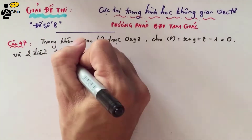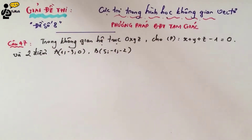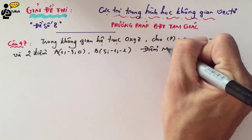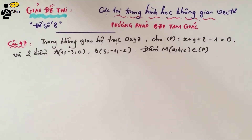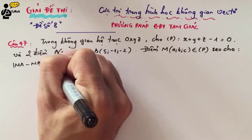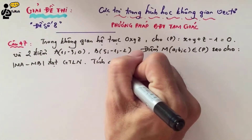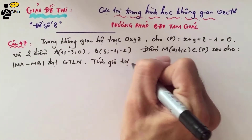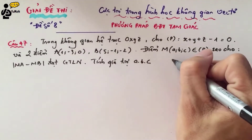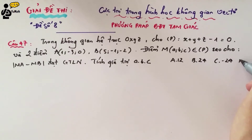Point A has coordinates (1, -3, 0), point B has coordinates (5, -1, -2), and point M has coordinates (A, B, C) lying on plane P, such that the absolute value of MA minus MB reaches its maximum. Find the value of A × B × C. Answer A is 12, answer B is 24, answer C is -24, and answer D is 1.